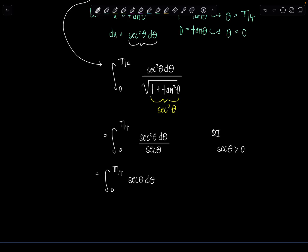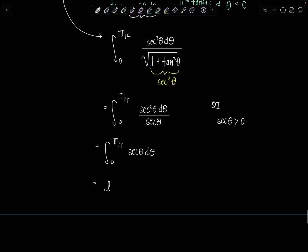And then anti-derivative of secant theta I derived it in the lecture video on trig integrals but I recommend memorizing it because it's not like a super intuitive derivation. So it's natural log absolute value secant theta plus tan theta and then we're going to evaluate it from zero to pi over four.